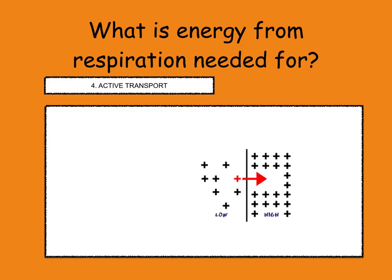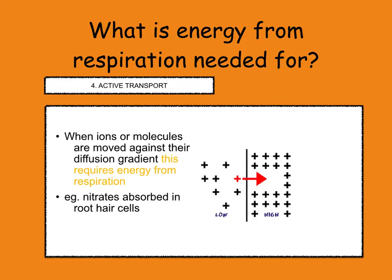Active transport, which we've covered before, is when ions or molecules are moved against their diffusion gradient, and this requires energy from respiration. For example, nitrates can be absorbed into root hair cells by active transport. Active transport also requires special protein carrier molecules sitting on the plasma membrane that help to move the ions against their concentration gradient.